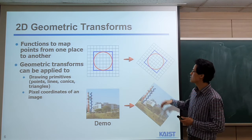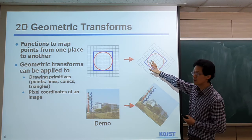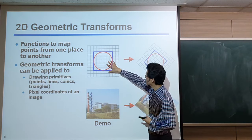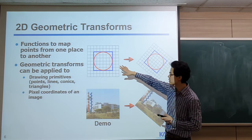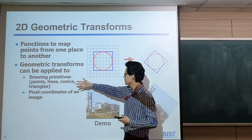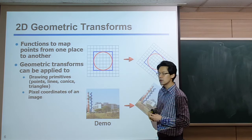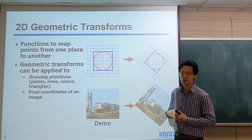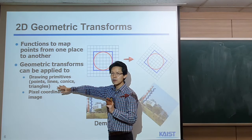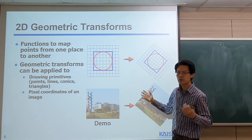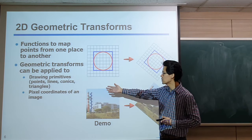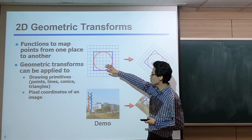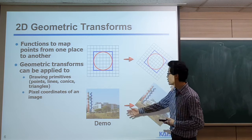Let's talk about geometric transformations, limited to the 2D case. Geometric transformation is a function that maps points from one place to another, and it can be applied to any kind of drawing primitive — points, lines, triangles, or conics. Some of you asked why we mainly use triangles for 3D applications. It turns out that triangles are one of the simplest representations that can represent very complicated 3D models. We can also apply geometric transformations to images.